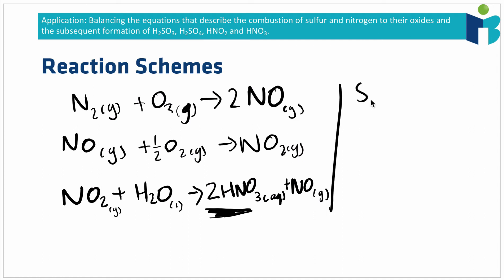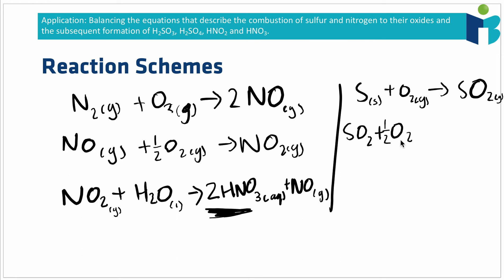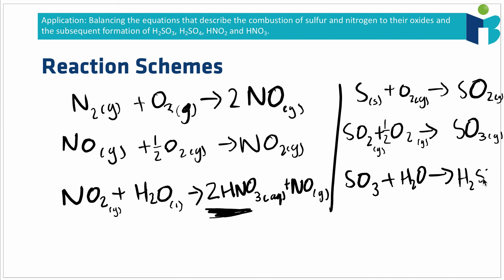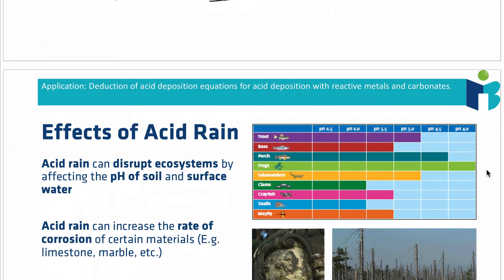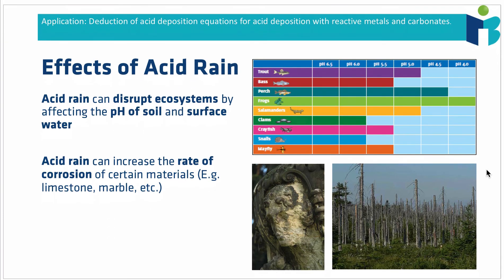Similarly, sulfur species in fuels are combusted in oxygen under combustion conditions to produce sulfur dioxide (SO₂). That sulfur dioxide can then react with oxygen in the atmosphere to produce sulfur trioxide (SO₃), and sulfur trioxide is the species that reacts with water to produce sulfuric acid (H₂SO₄). Note that this reaction needs to be balanced with a coefficient of 3. So both pathways — nitrogen and sulfur combustion — produce strong acids (HNO₃ and H₂SO₄) that reduce the pH of rain.